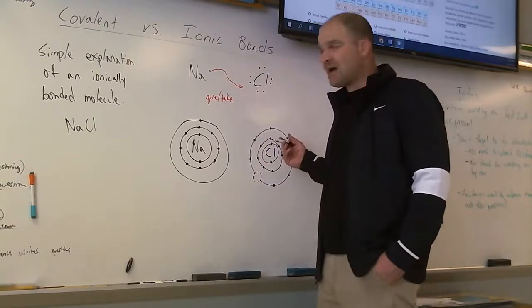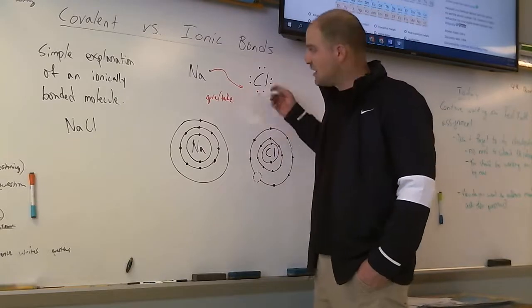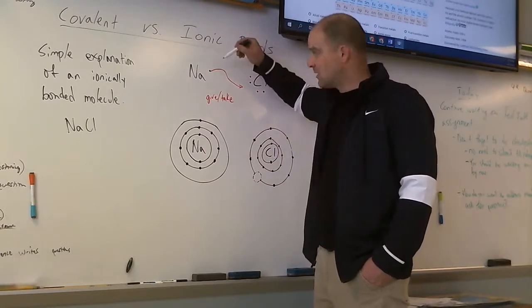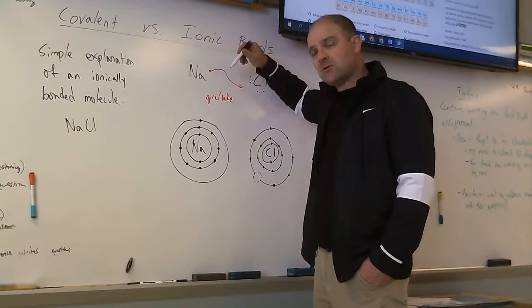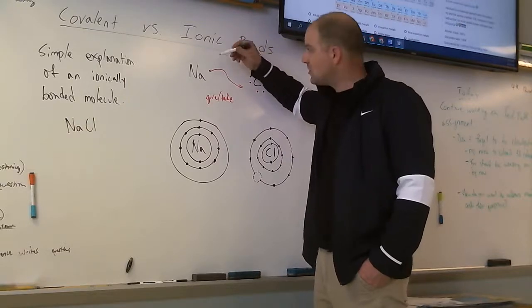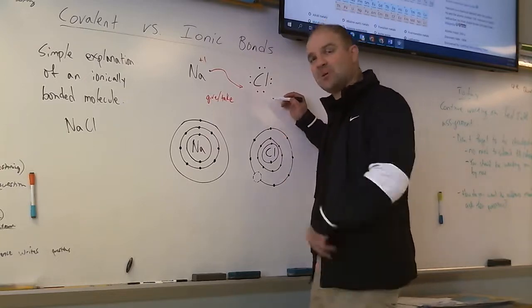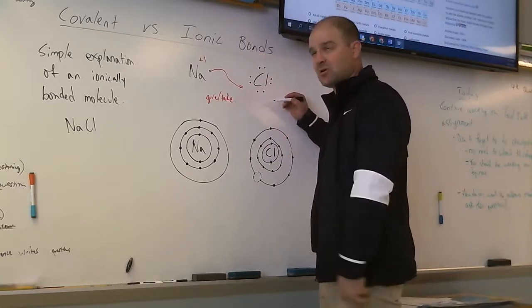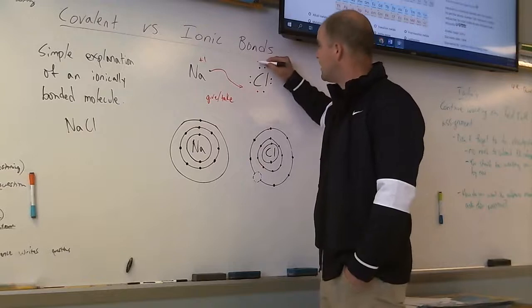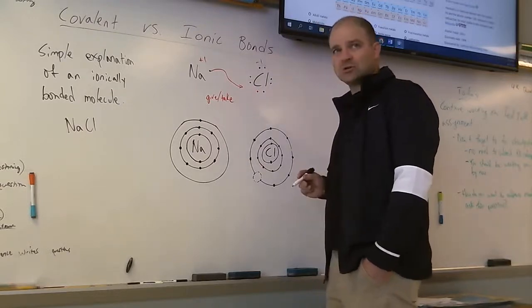And then what you have after that exchange is one fewer electron with the sodium, so if you have one fewer of a negative charge that means you're gonna have a positive one charge. And then since chlorine is gonna be picking up an extra negative particle, that means that they would have a negative one charge.